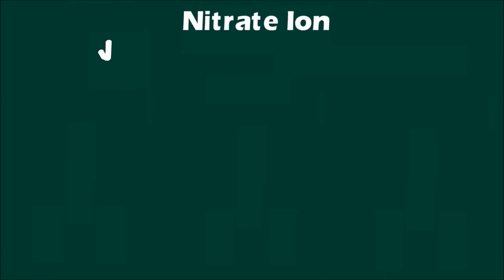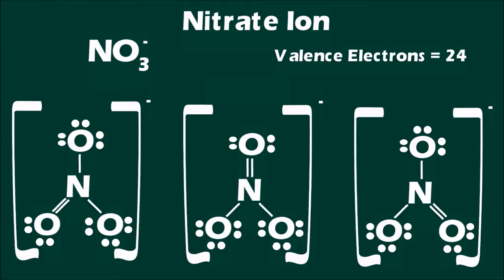Often, when you are drawing Lewis structures, you will find that there is more than one acceptable representation. An example is the nitrate anion. There are three accurate and equivalent Lewis structures that can be drawn for this molecule.